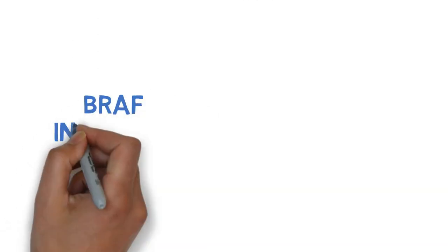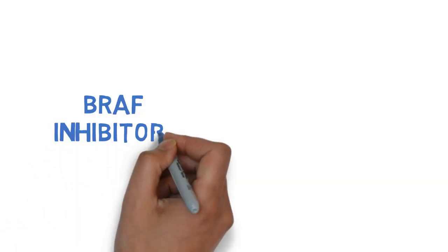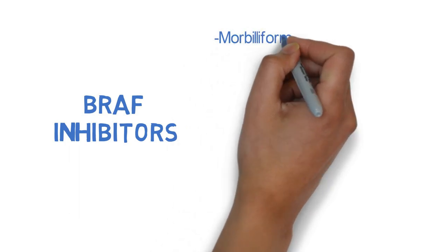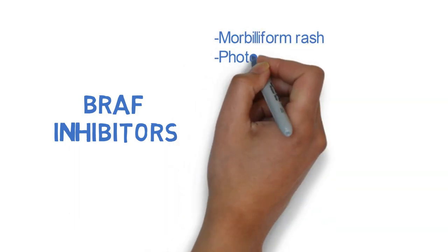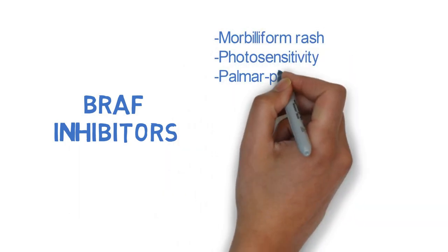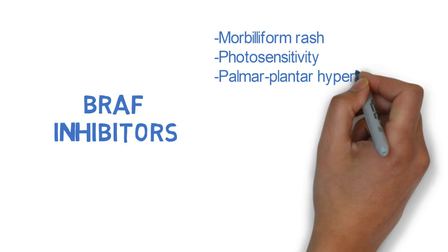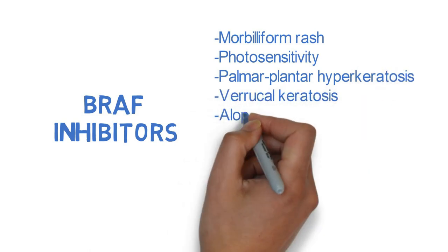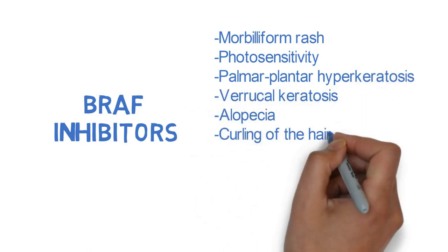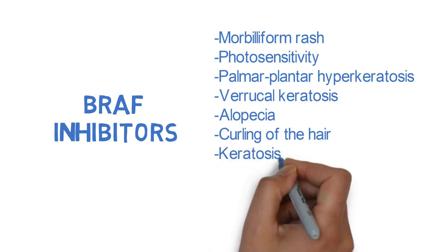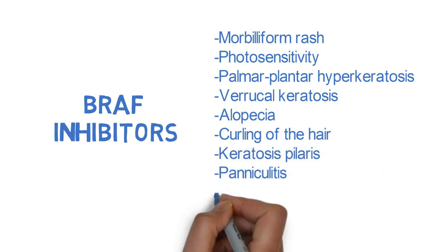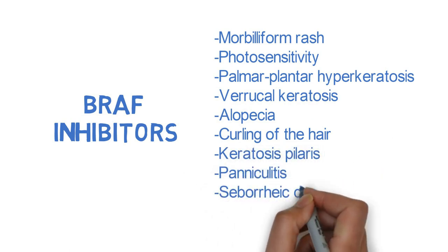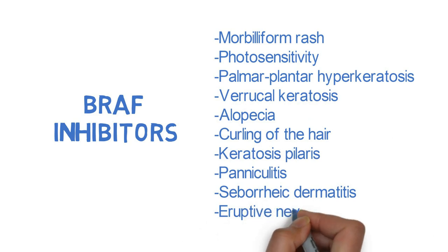For BRAF inhibitors, common side effects include morbilliform rash, photosensitivity, palmar plantar hyperkeratosis, verrucal keratosis, alopecia, curling of the hair, keratosis pilaris, panniculitis, seborrheic dermatitis, and eruptive nevi. Let's go through each one by one.